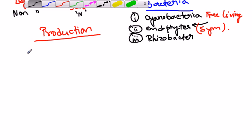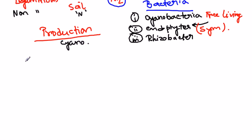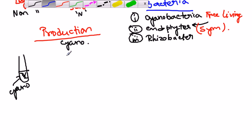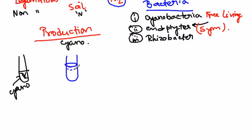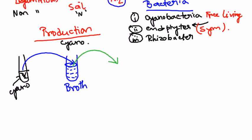We then transfer this culture into a liquid broth. After transferring all the culture material into the broth, we take the bacteria out and culture it in a giant chamber — also called the fermenter. Inside the giant chamber, we put our cyanobacterial inoculum along with the medium, which is usually made up of soil and water.